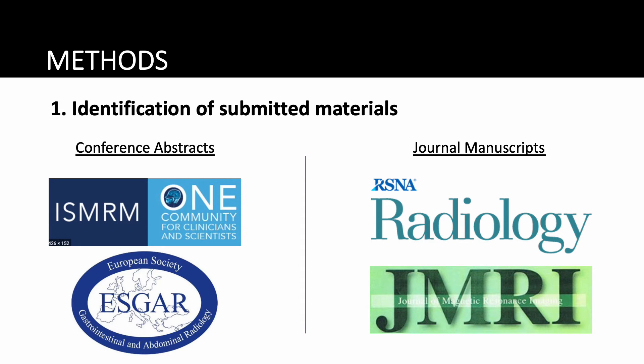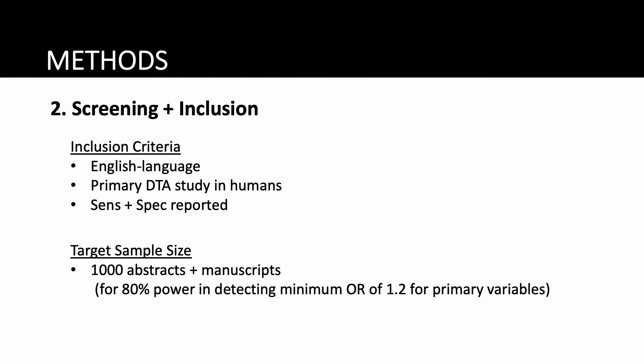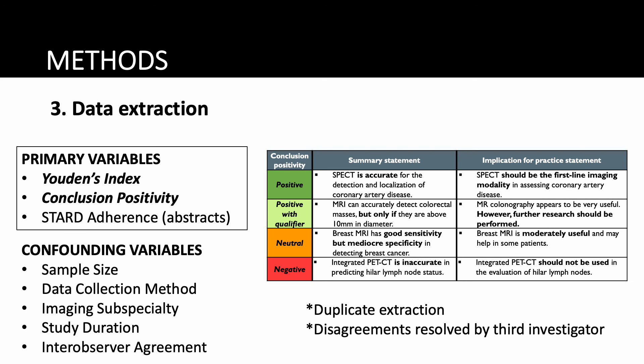After contacting multiple major radiology conferences and journals, we obtained access to abstracts submitted to ESGAR and ISMRM, as well as manuscripts submitted to Radiology and JMRI. We screened submitted materials to include primary imaging diagnostic accuracy studies that reported sensitivity and specificity. Our main variables of interest were Newton's index, conclusion positivity, and the number of reported STARD items. We extracted data for the potential confounders listed here, all of which have previously demonstrated some association with the reporting and dissemination of test accuracy research.